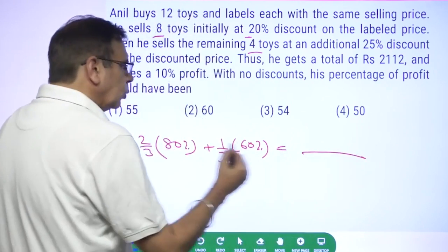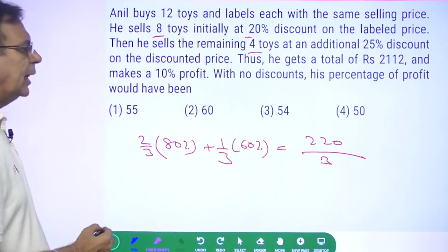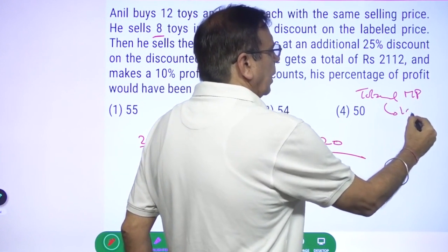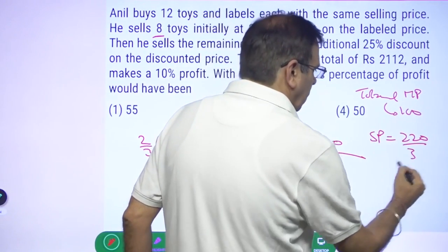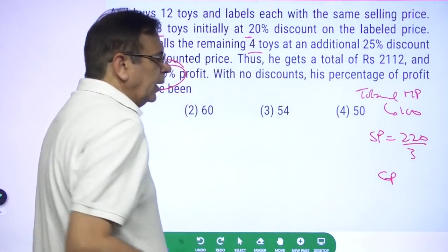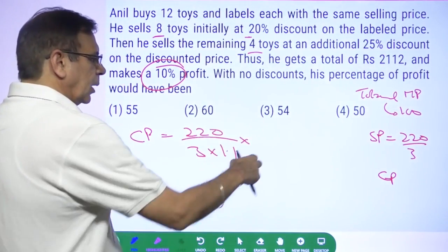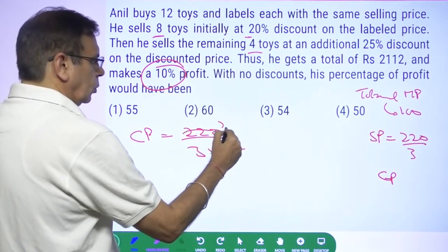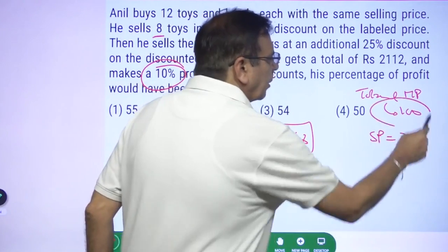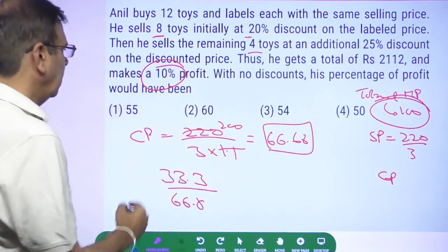What is this equal to? 2 times 60 plus 60, 220. 220 upon 3. So his selling price, if the total mark price is 100, his selling price is equal to 220 upon 3. So what will be the cost price? There's a 10% profit. If there's a 10% profit, then the cost price will be 220 by 3 divided by 1.1. 200 by 3, 66.6. His cost price is 66.6, his mark price is 100. What will his profit be? Profit will be 33.3 on a cost of 66.6. It will be 50% profit.